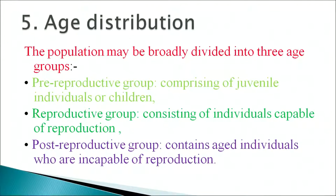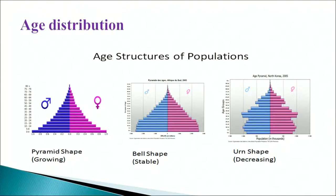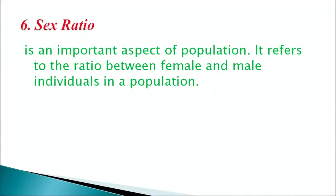Next is age distribution. The population may be broadly divided into three age groups: the pre-reproductive group comprising juvenile individuals or children; the reproductive group consisting of individuals capable of reproduction; and the post-reproductive group containing aged individuals who are incapable of reproduction. The age structure can be represented as a pyramid shape (growing), a bell shape (stable), or an urn shape (decreasing). Sex ratio is also an important aspect of population, referring to the ratio between female and male individuals in a population.